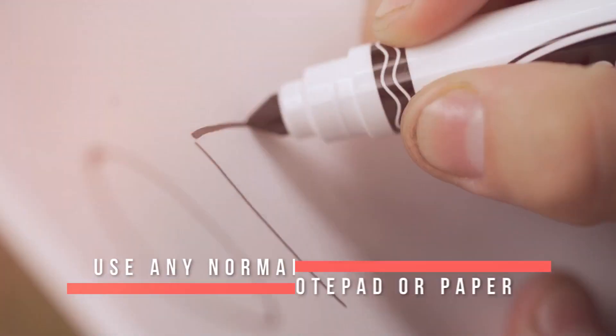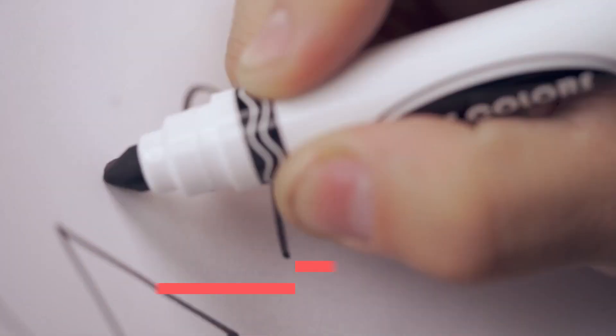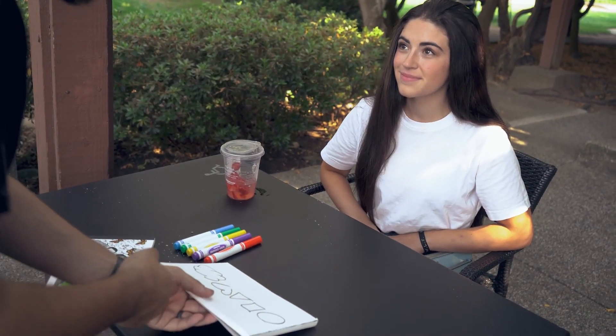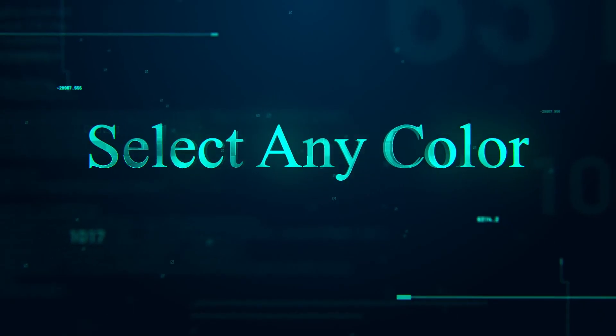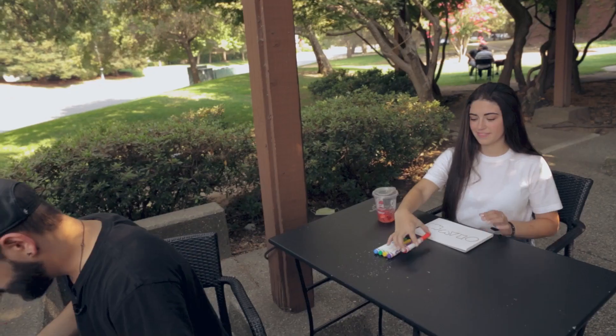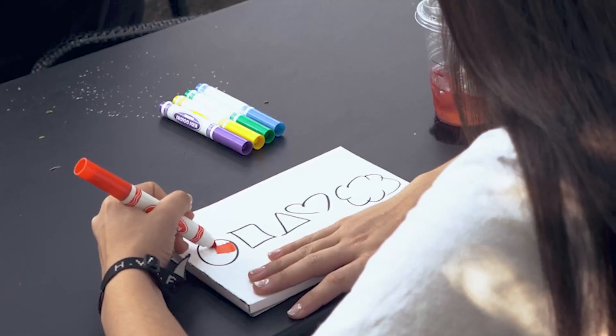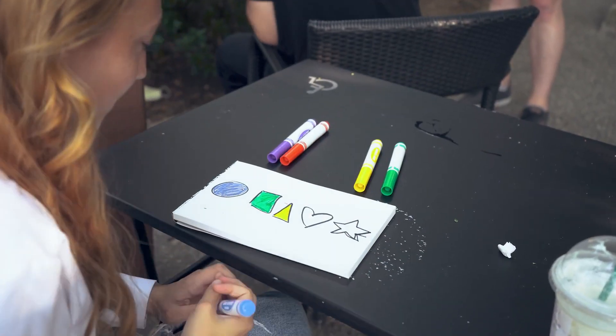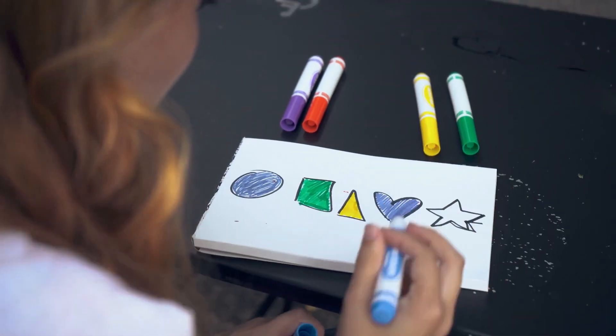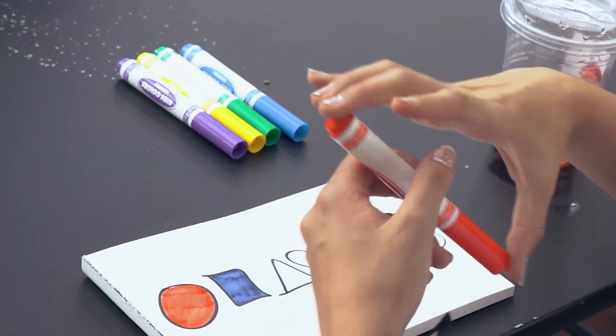Here I have two pads, and I've already drawn a circle, a square triangle, a heart, and a cloud. Randomly pick any color you want and start coloring it in. I'll do the same while looking away. You can actually pick the same color for the next shape if you want. It's completely up to you.